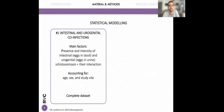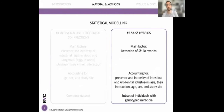We were first interested in seeing the impact of intestinal and urogenital co-infections on morbidity, looking at the presence and intensity of eggs in stool and urine, as well as their interactions, while accounting for age, sex, and study site. Then we looked at the impact of hybrids — by looking at the presence or absence of hybrids between haematobium and bovis in a given individual — while accounting for other risk factors. For this second analysis, we used a subset of individuals that had genotyped miracidia.